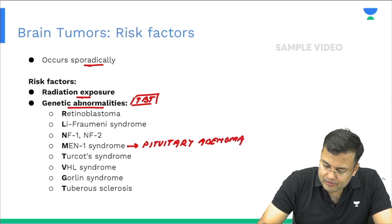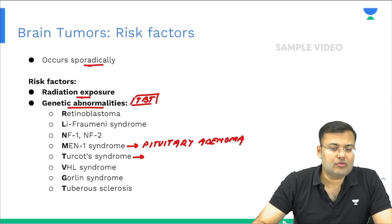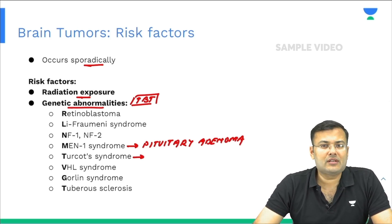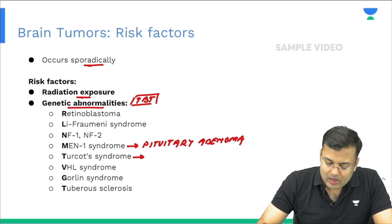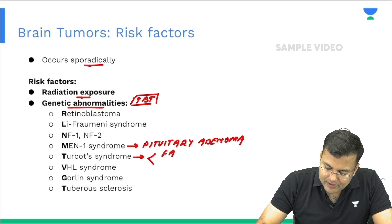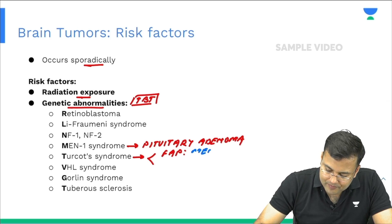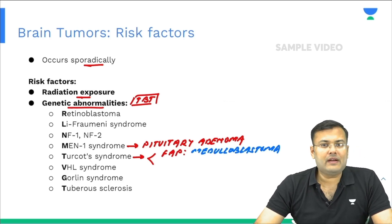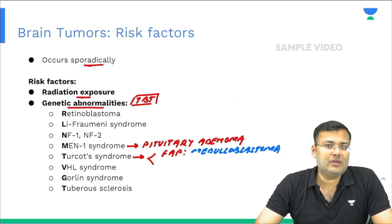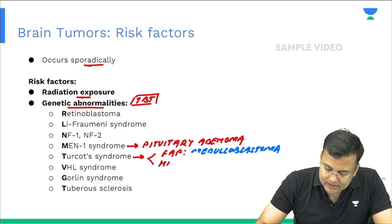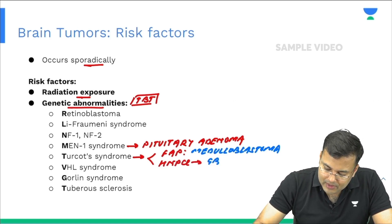After that, Turcot syndrome — associated with familial adenomatous polyposis (FAP). This is autosomal recessive and associated with brain tumor. When associated with FAP, the tumor is medulloblastoma. Sometimes Turcot syndrome is associated with HNPCC, in which case the tumor is glioblastoma multiforme.